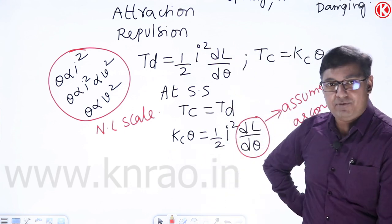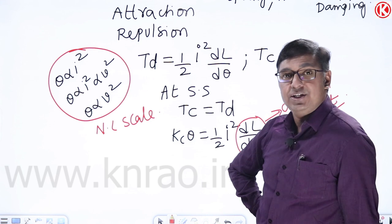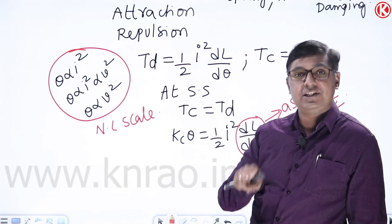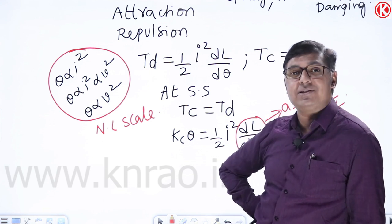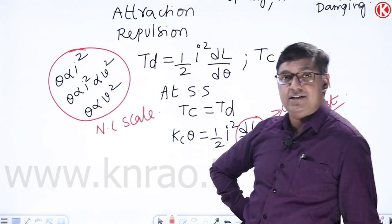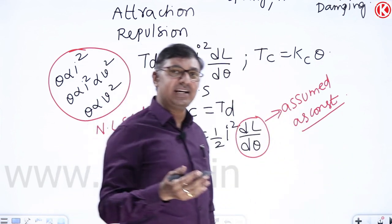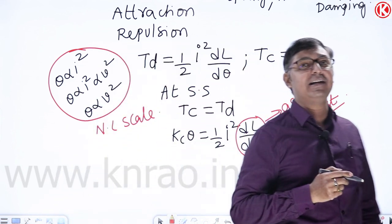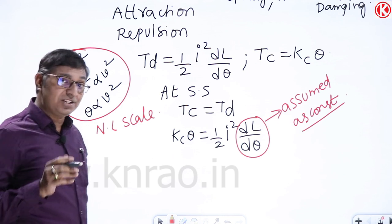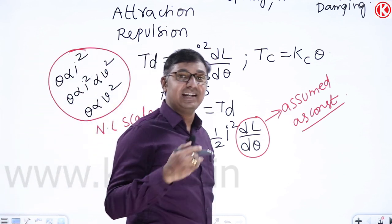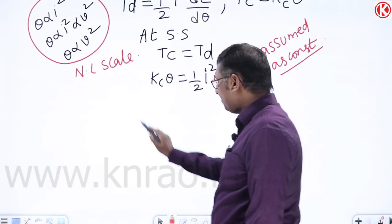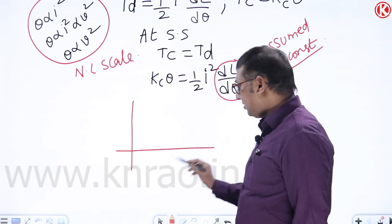In MI instruments, no current passes through the springs. In PMMC instruments, we can't measure high currents because the springs are current-carrying conductors. In MI instruments, even though no current passes through the springs, we still can't measure high currents due to the saturation problem.